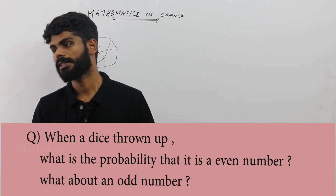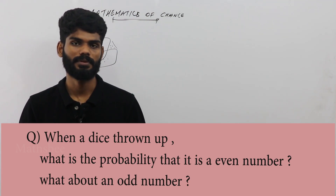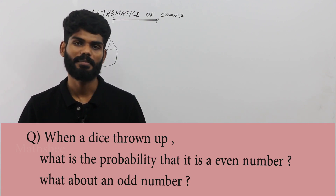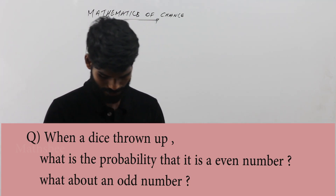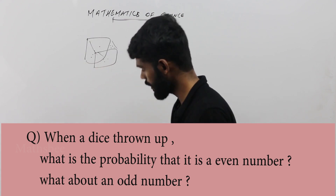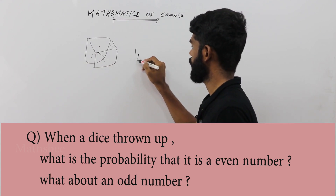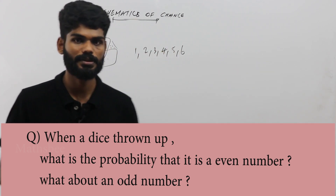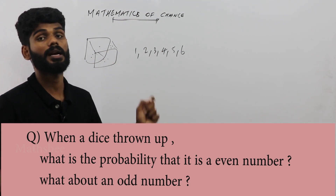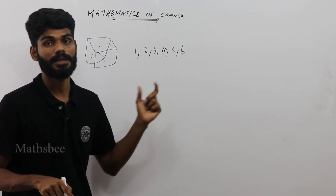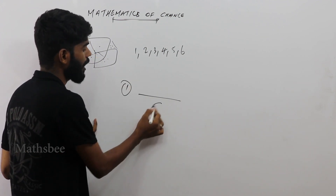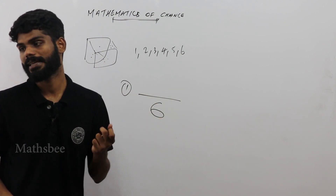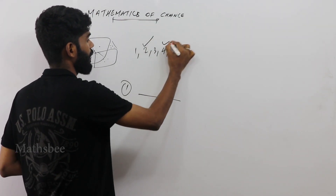Now we have a question. When one dice is thrown, what is the probability that it is an even number? The second question is what is the probability of getting an odd number? The total outcomes are 6 numbers: 1, 2, 3, 4, 5, 6. Even numbers are 2, 4, 6.